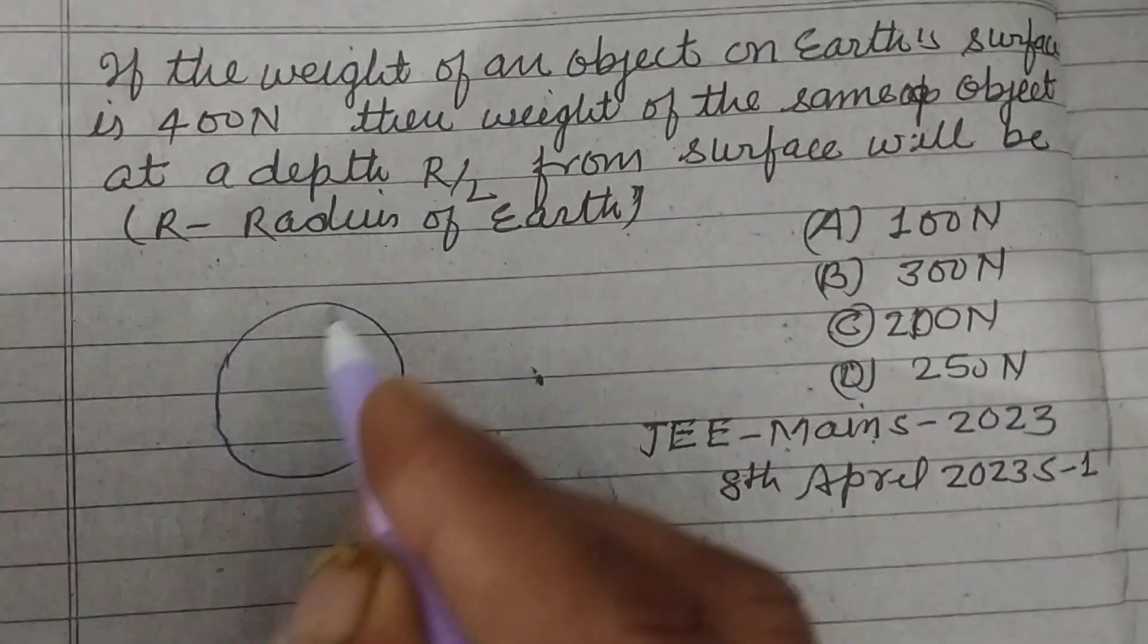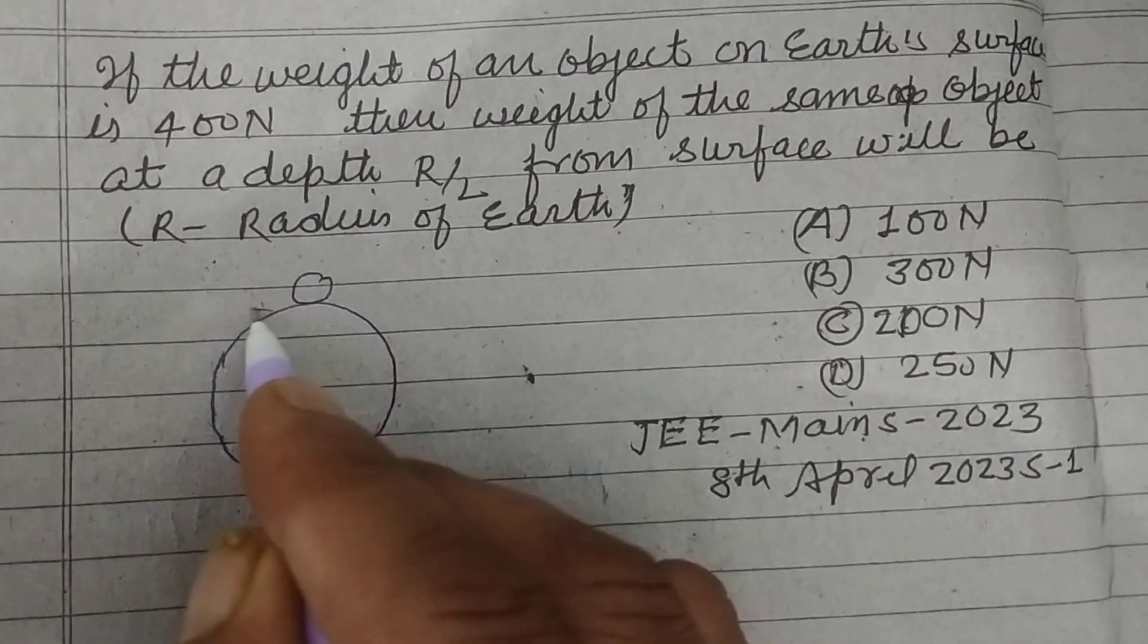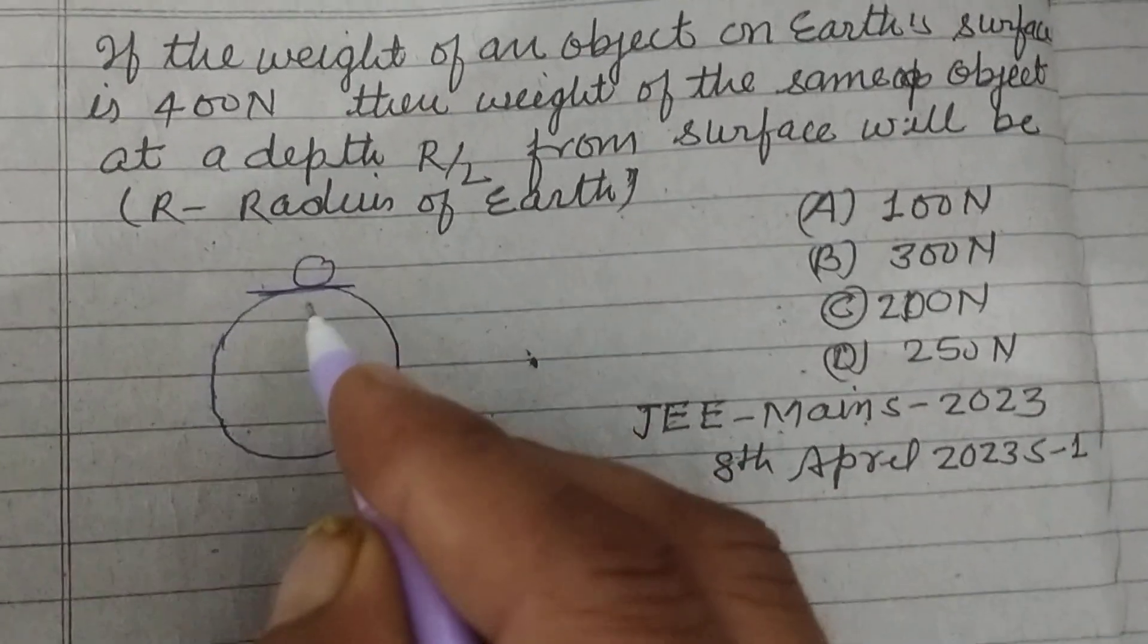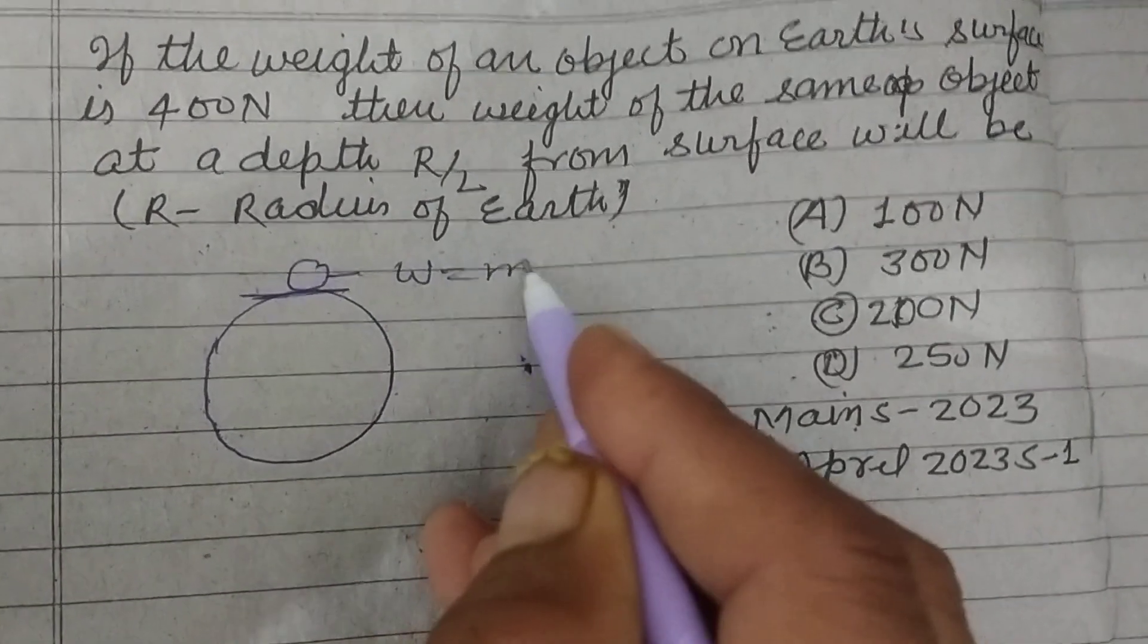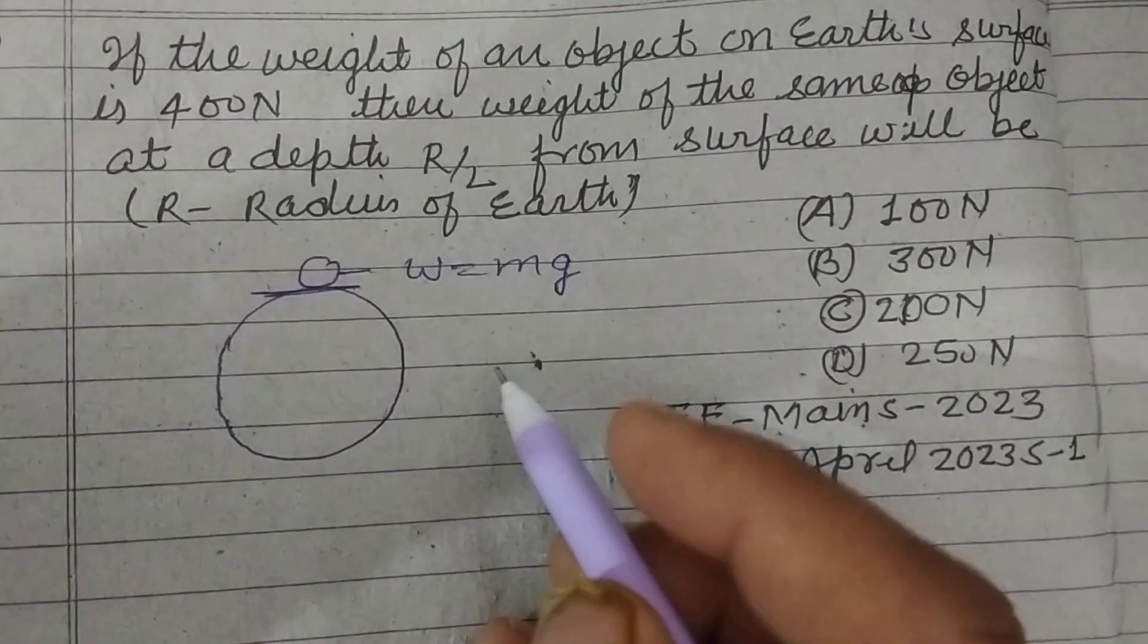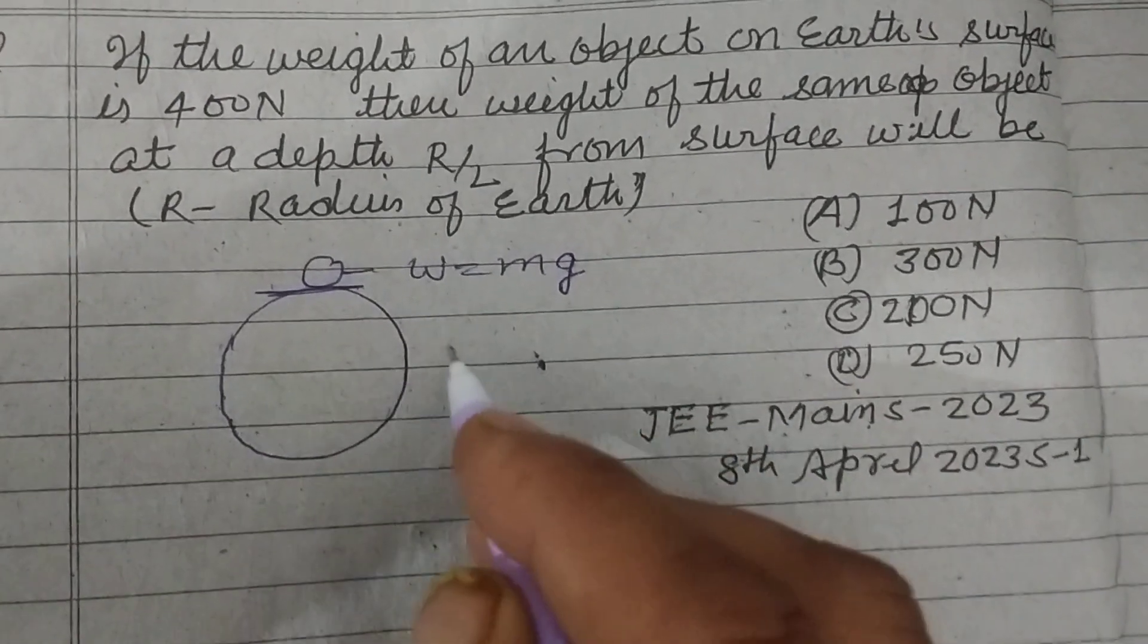when an object is at the surface of the Earth, its weight w equals mg, where g is acceleration due to gravity.